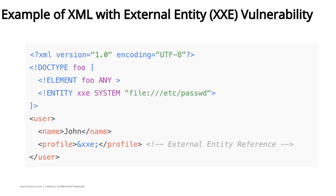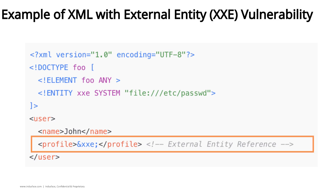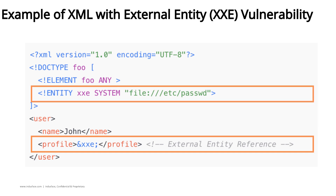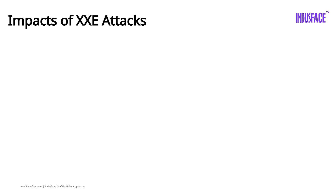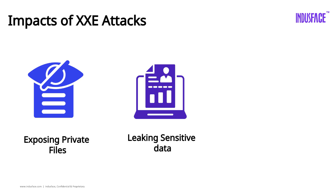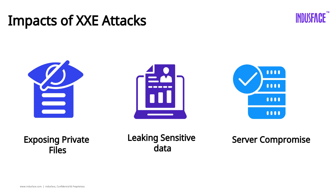For example, in this XML, this part defines an external entity XXE that points to the local file system — /etc/passwd — causing the application to load and return the contents of the sensitive password file in the XML response. This could mean exposing private files, leaking sensitive data, or even compromising the entire server.